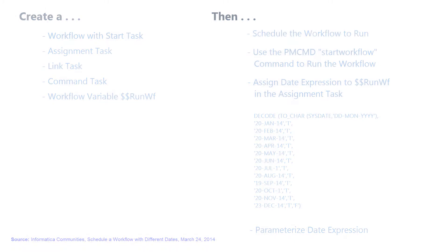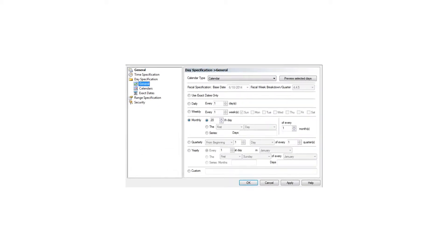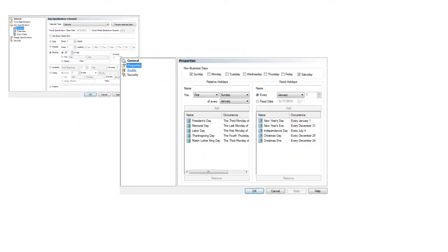Scheduling a Power Center workflow to run in Activatch requires no scripting and can be managed by simply associating a schedule for when a workflow is to run, and the use of a corporate calendar so you can exclude non-business days from your schedules.